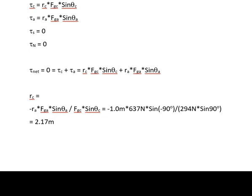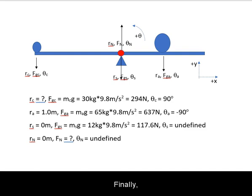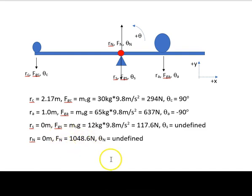We solve for the unknown, being very careful with negative signs and angles. Insert the numbers and calculate the answer. Finally, we look back at our drawing to check that our answer is sensible. The normal force must hold up the weight of the system. The torque arm of the child must balance the torque arm of the adult due to the difference in their weight.